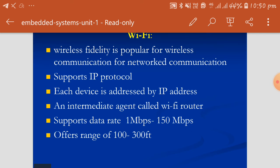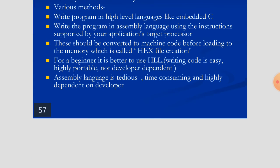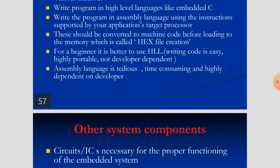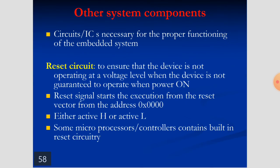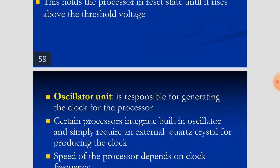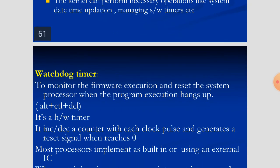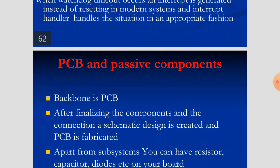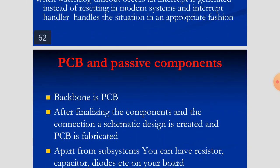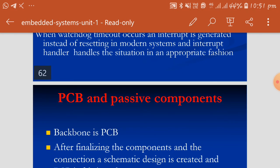The I/O subsystem and communication interface will be studied in detail in the next class, along with embedded firmware (embedded software), other system components like clock and timing circuits, reset circuits, ground and protection circuits, oscillator units, real-time clock, watchdog timers, and PCB layout components. Studying all of this will cover the first and second units successfully. Thank you for watching this video.